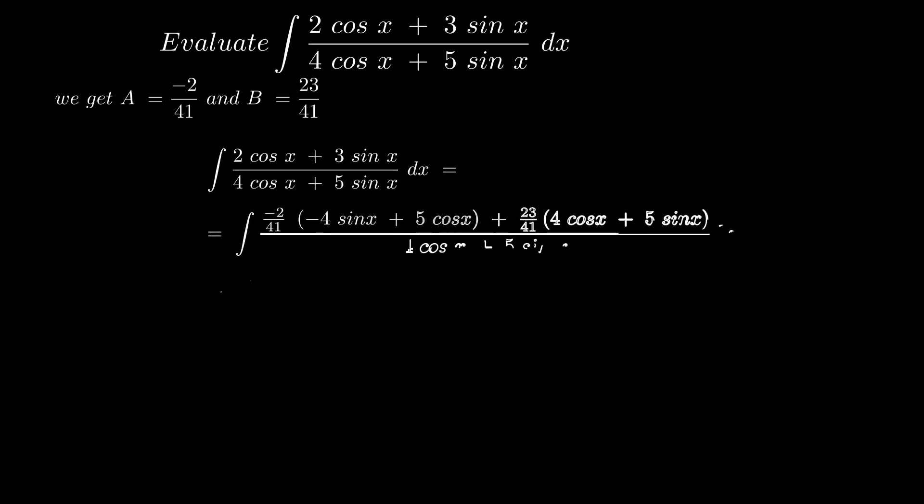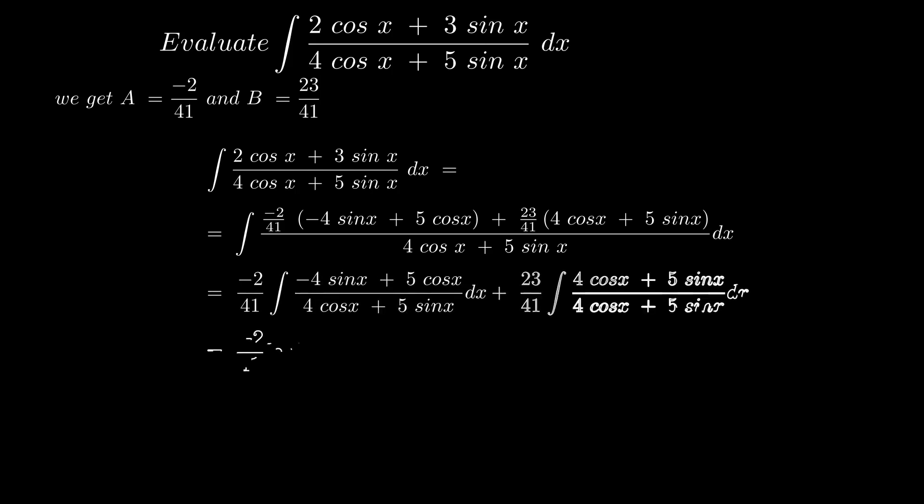Let's replace these values and solve the equation further. Finally, we get minus 2 by 41 log of 4 cos x plus 5 sin x plus 23 by 41 x plus C.